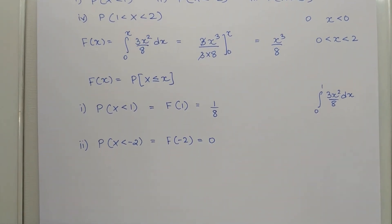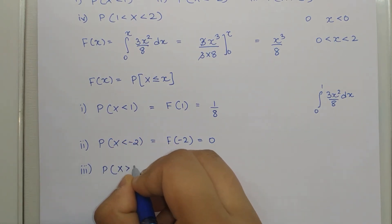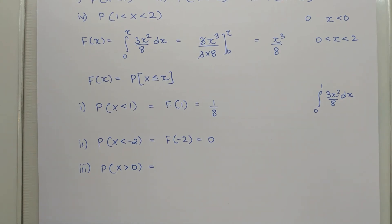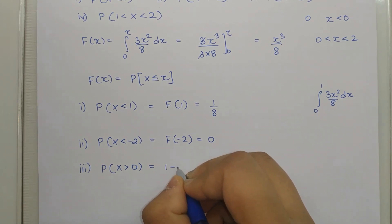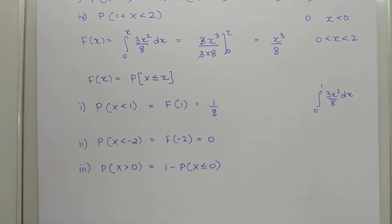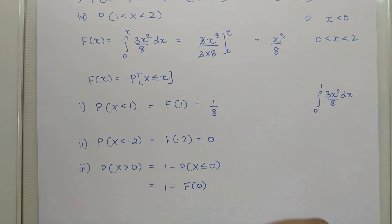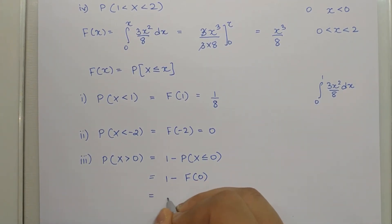For P(X > 0): using the complement, this is 1 - P(X ≤ 0) = 1 - F(0). Since F(0) = 0³/8 = 0, the answer is 1 - 0 = 1.